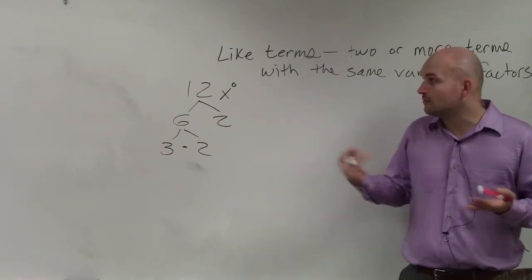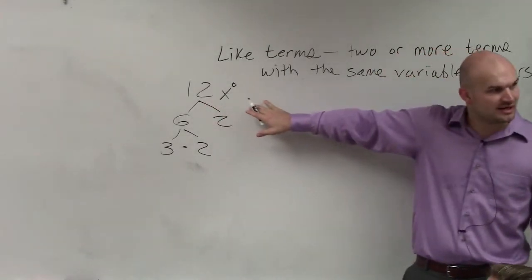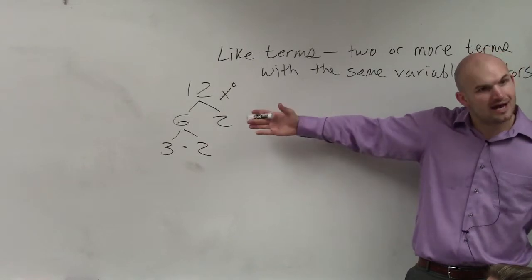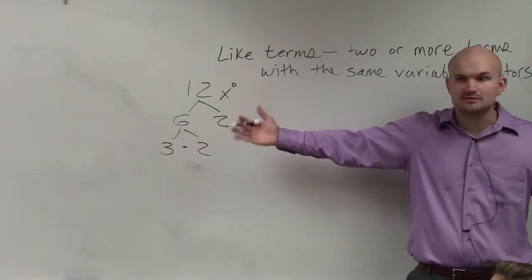Because if you think about this, what I said is all of them have to have the same variable factors. So then could all numbers be written as x to the 0 power? Yeah. So we could technically say they all have x to the 0 power as their variable factor. Does that kind of make sense?